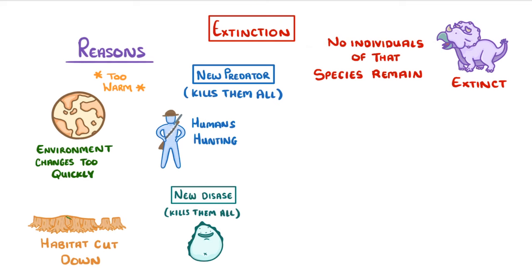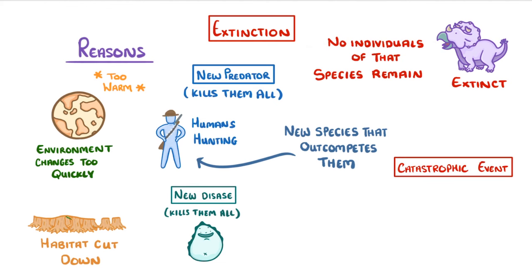A common reason is that a new species comes along and outcompetes them for food or some other resource. Or more rarely, a catastrophic event might occur, such as the asteroid that hit Mexico and wiped out the dinosaurs 66 million years ago.